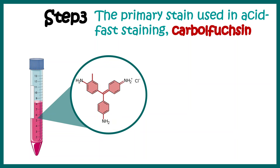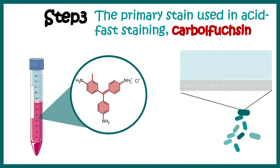We then add the primary stain — in this case malachite green. Alternatively, some people also use carbolfuchsin, which is used for acid-fast staining. Both carbolfuchsin and malachite green are highly penetrant, which is necessary because an endospore wall is almost impermeable. We need a highly penetrant stain such as carbolfuchsin or malachite green to get through.